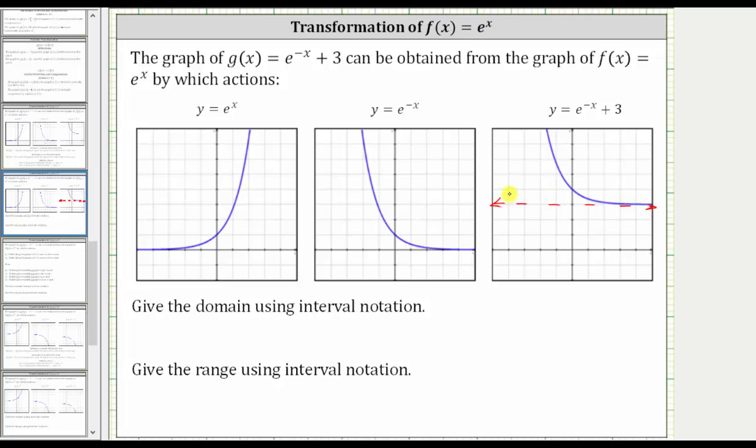And now the domain is the set of all possible inputs or x values. The domain or x can be any real number and therefore the domain is all reals. We can also see this graphically because the graph moves right and left indefinitely without any holes or breaks. And therefore the domain is the open interval from negative infinity to positive infinity.